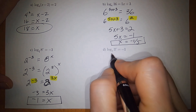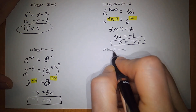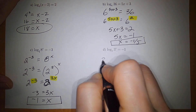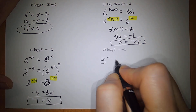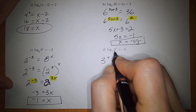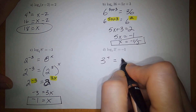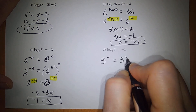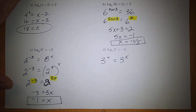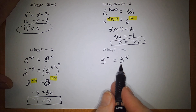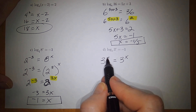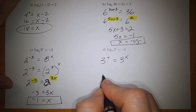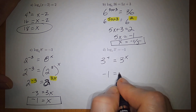For the last equation: 3 to the negative 1 power equals 3 to the x. They already have the same base, so the exponents must be equal — therefore x equals negative 1.